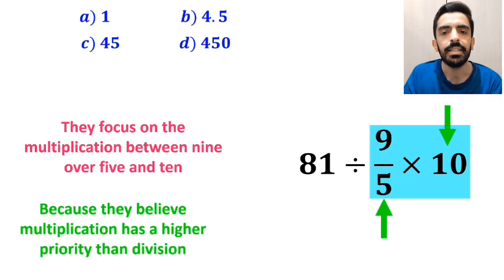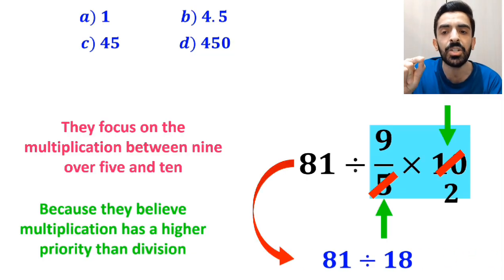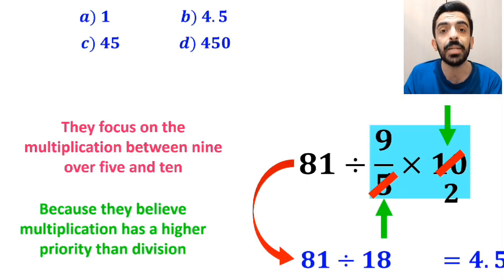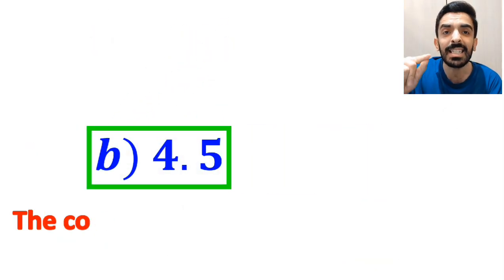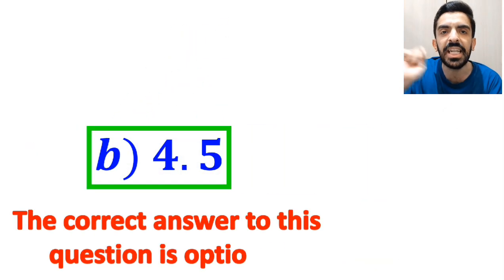As you can see in the image, they simply cancel out 10 with the 5 in the denominator, and this expression simplifies to 81 divided by 18, which finally gives them the answer 4.5. And immediately, they conclude that the correct answer to this question is option B.